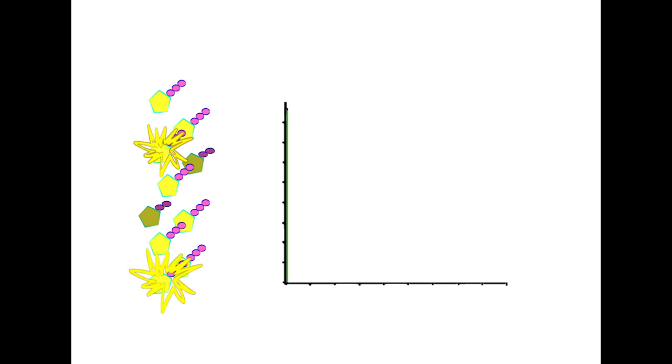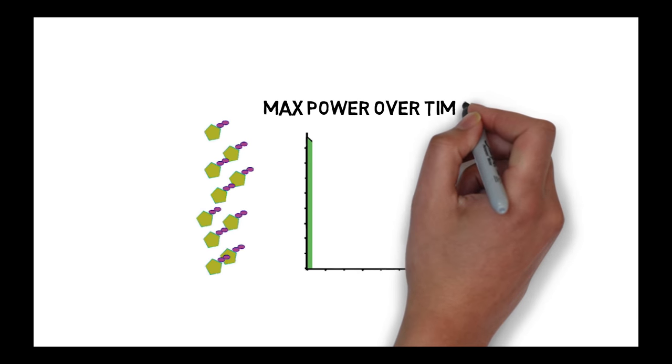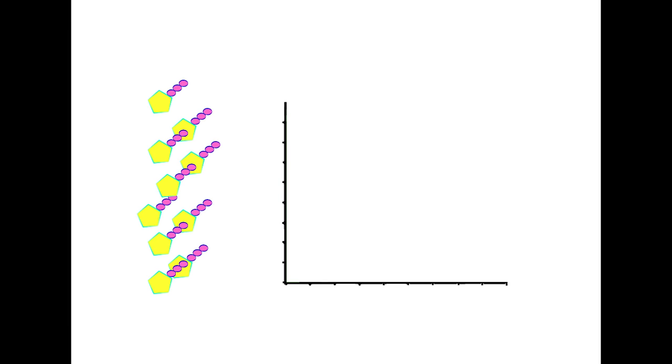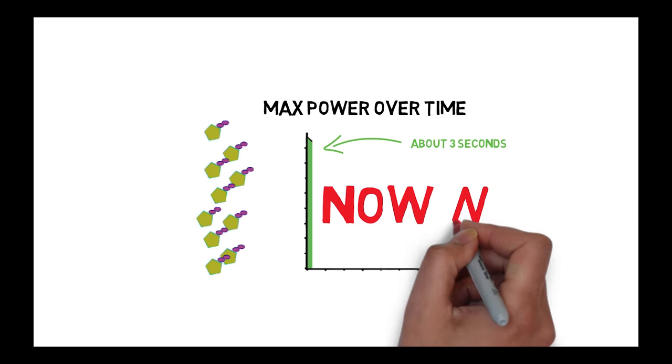The problem is, ATP is an unstable molecule, so your muscles can only store a limited amount. Let's see what happens when you hit that first rep. Boom! You explode. This is enough stored energy to cover the first few seconds of a sprint, or get you at least a few seconds into that big 1 rep max. 1, 2, 3, now what?